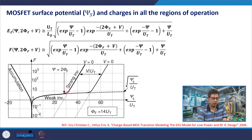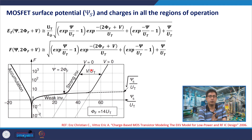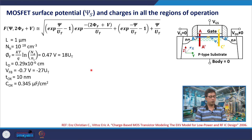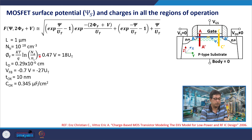We had discussed that the onset of strong inversion depends on the local channel potential v. When you have a nonzero VDS, the value of v in a MOSFET would be increasing from the source edge of the channel to the drain edge of the channel. We had also calculated a few values corresponding to a typical device, as discussed in the previous lecture.